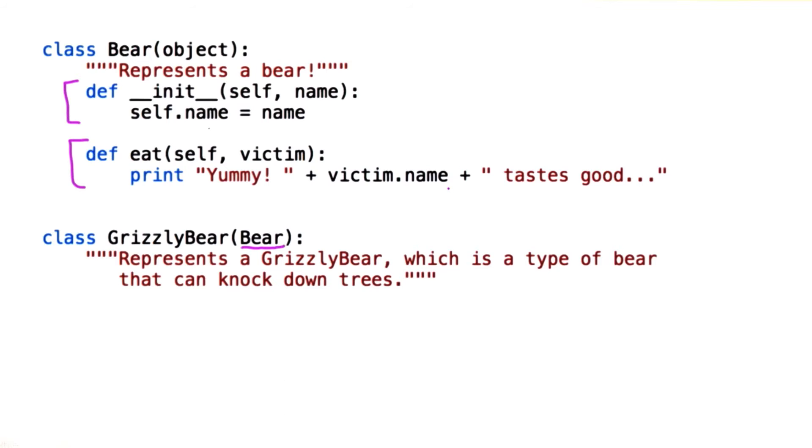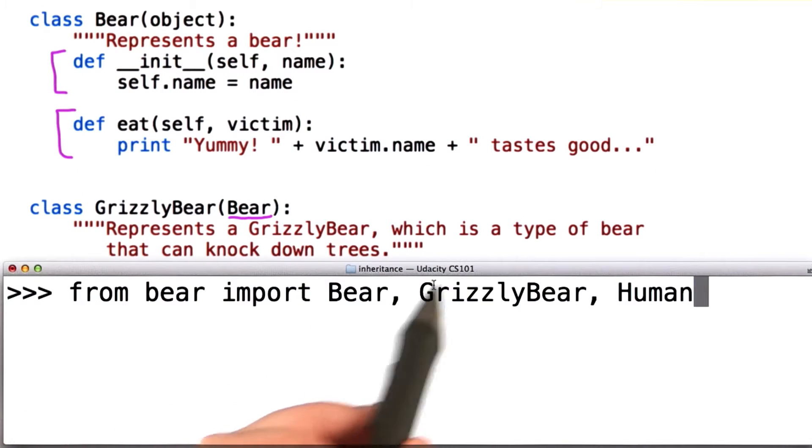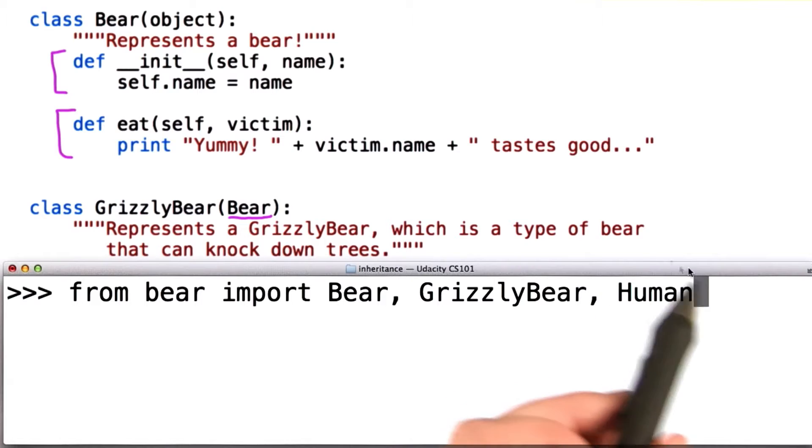So let's see how that works. I'm going to import from the bear class the bear, grizzly bear, and human definitions. I haven't shown you human, but you should be able to guess what it is.